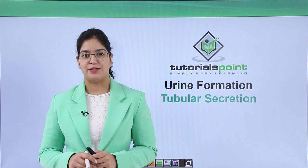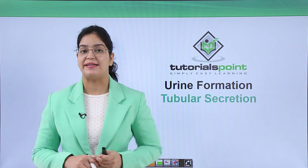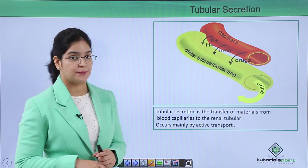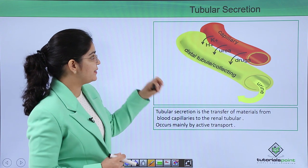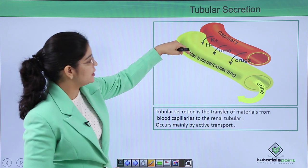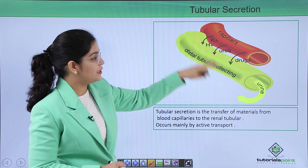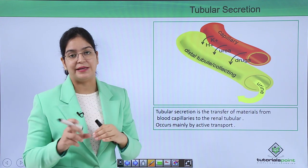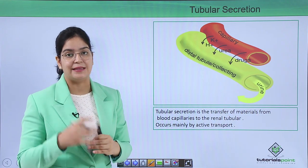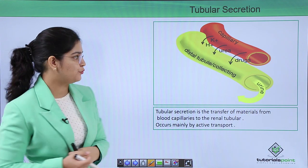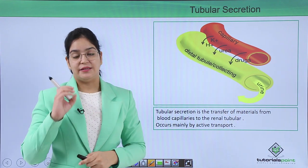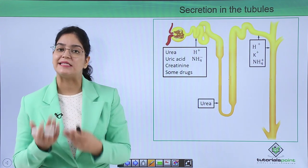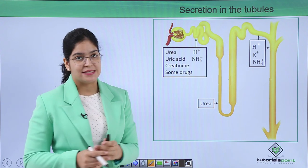Hello guys, today we are going to learn about the third and final step of urine formation, that is tubular secretion. Tubular secretion is the transfer of material from blood capillaries to the distal tubule or the tubular part. Mainly waste materials are secreted into the tubule so that they can move out from the body through urine. This process is mainly done by active transport.